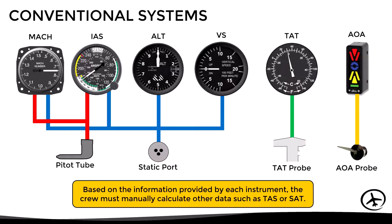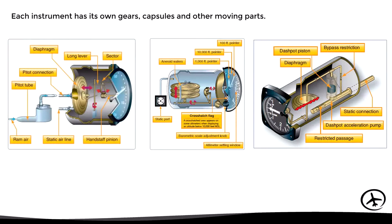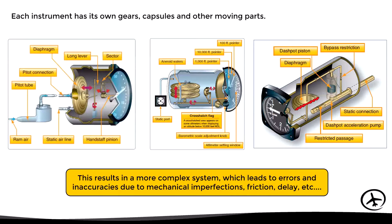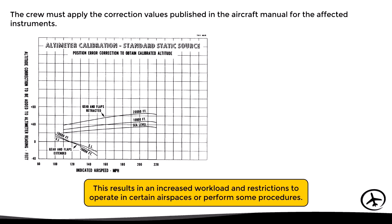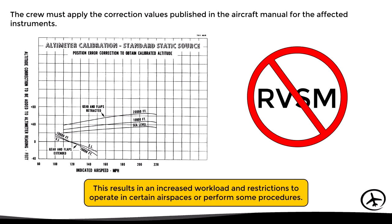Because each instrument is independent, the crew must manually calculate derived data such as true airspeed or static air temperature. Additionally, each instrument has its own gears, capsules, and other moving parts, resulting in errors and inaccuracies due to mechanical imperfections, friction, and delay. The crew must manually apply corrections published in the aircraft manual, increasing workload and restricting operations in airspaces requiring high accuracy.